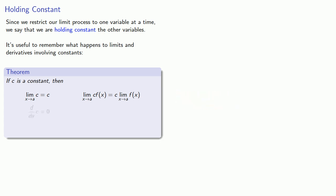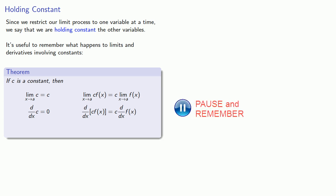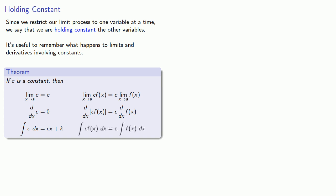Meanwhile, if we differentiate a constant, we get zero, and the derivative of a constant times a function is going to be the constant times the derivative. And while we're at it, let's introduce that third limit process we're familiar with. The integral of a constant is the constant times the variable plus some other constant, and the integral of a constant times a function is the constant times the integral of the function.